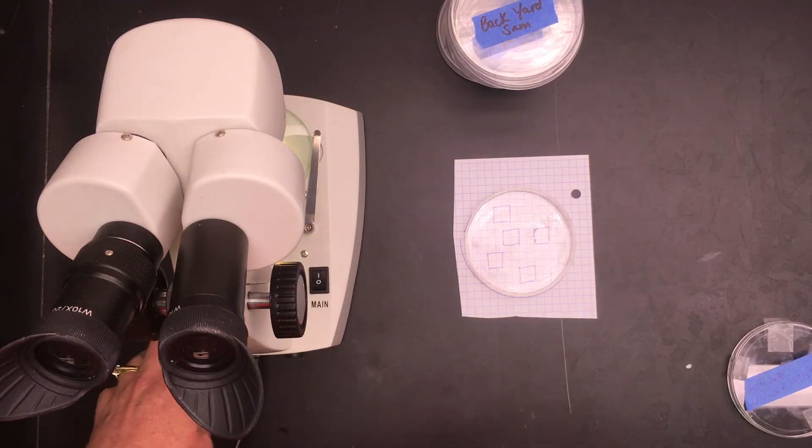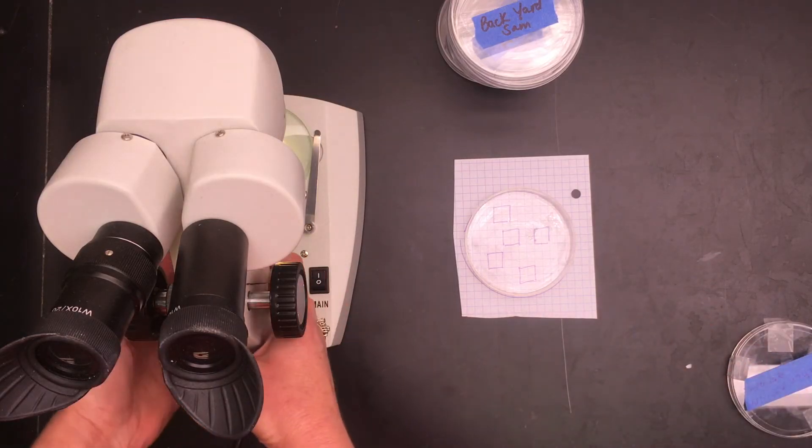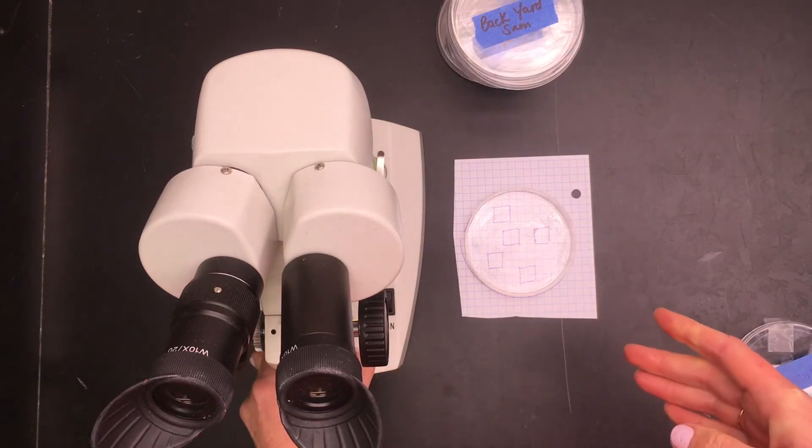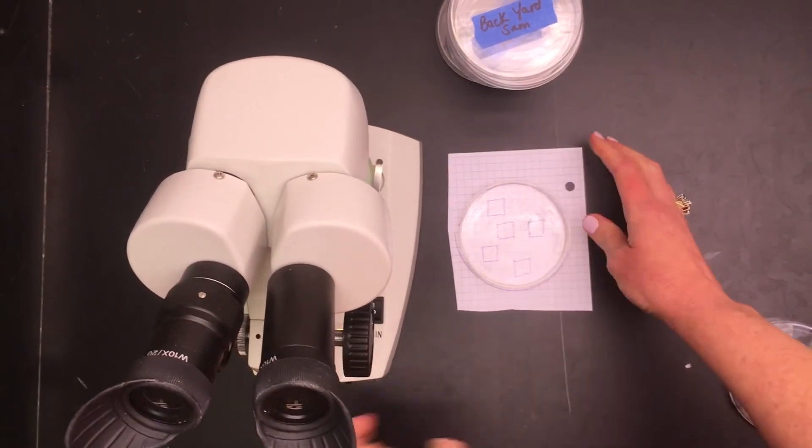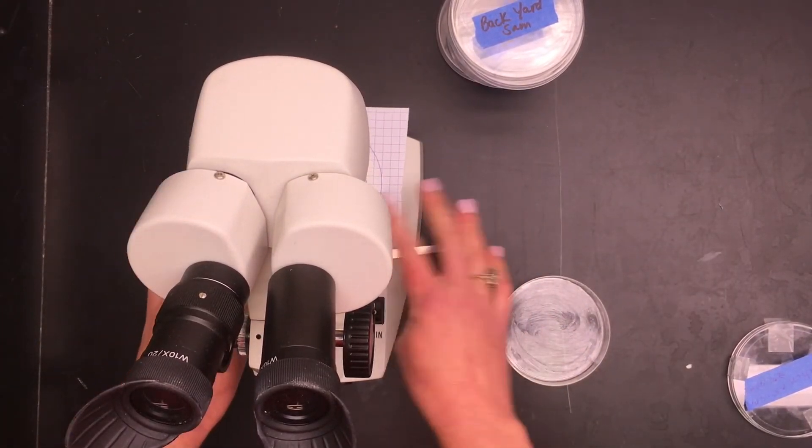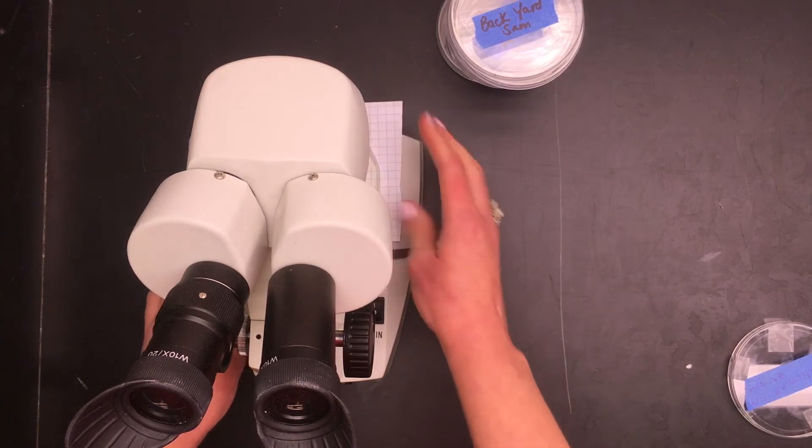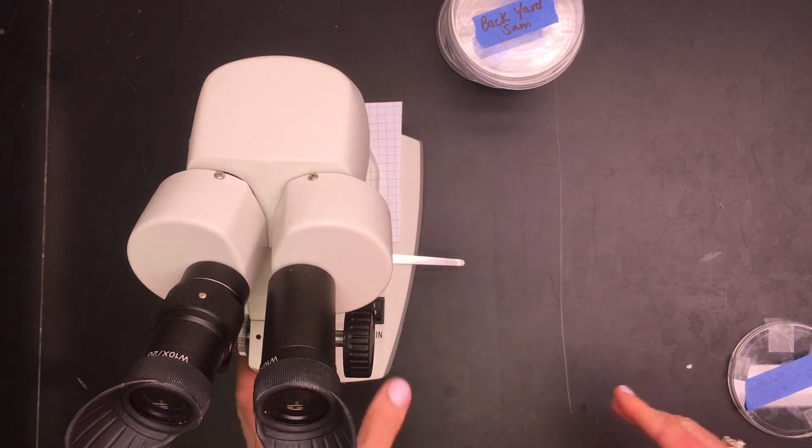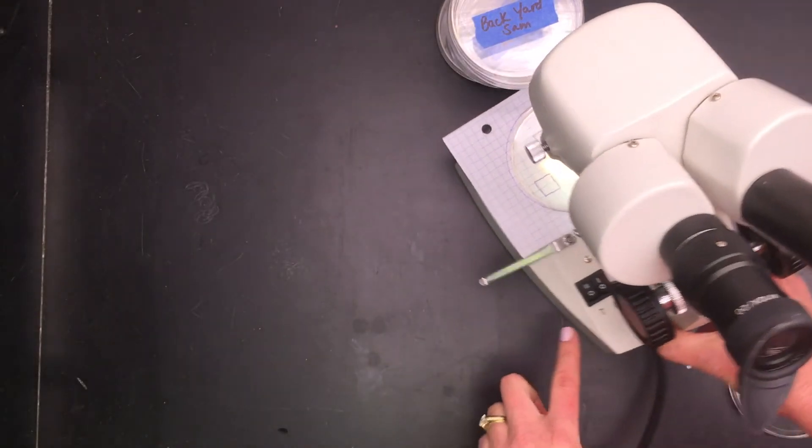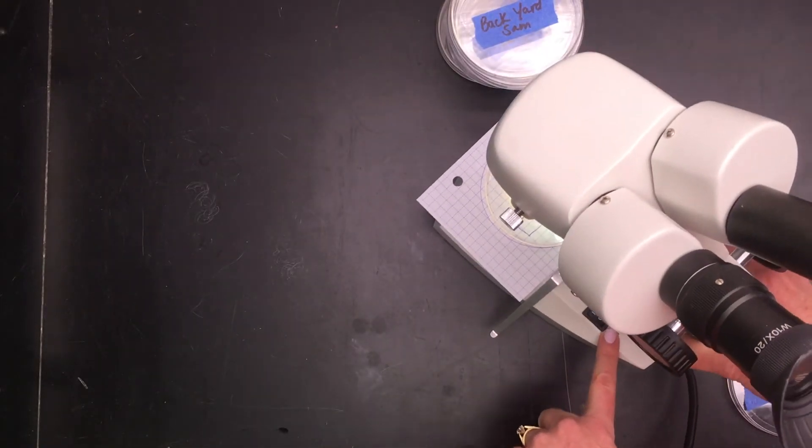You're gonna place your dish on your template and then also on a stereoscope. The stereoscope has light that shines up from the bottom and also down from the top. Take your template and place it on the stereoscope, and then your petri dish as well on the stereoscope.